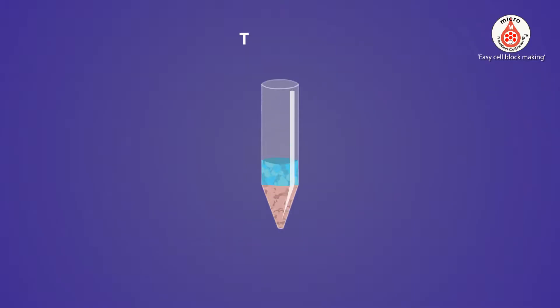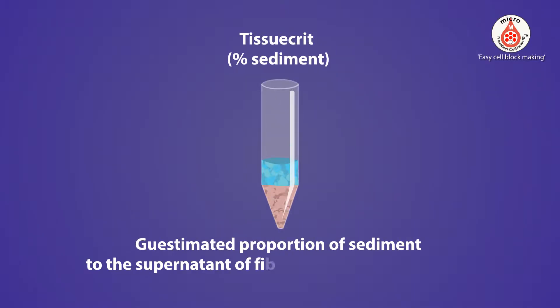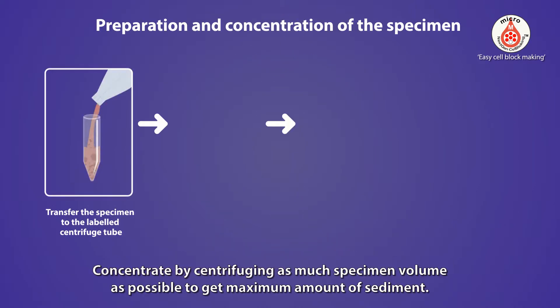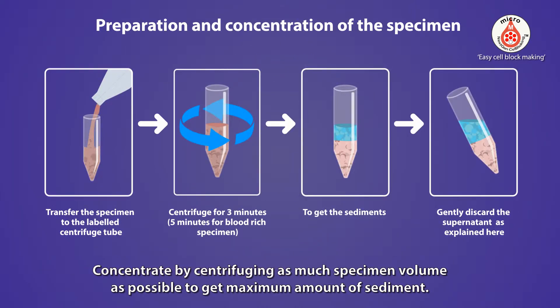Tissue crit is the proportion of sediments with diagnostic cellular material without blood in the final concentrated specimen. Concentrate by centrifuging as much specimen volume as possible to get the maximum amount of sediment.